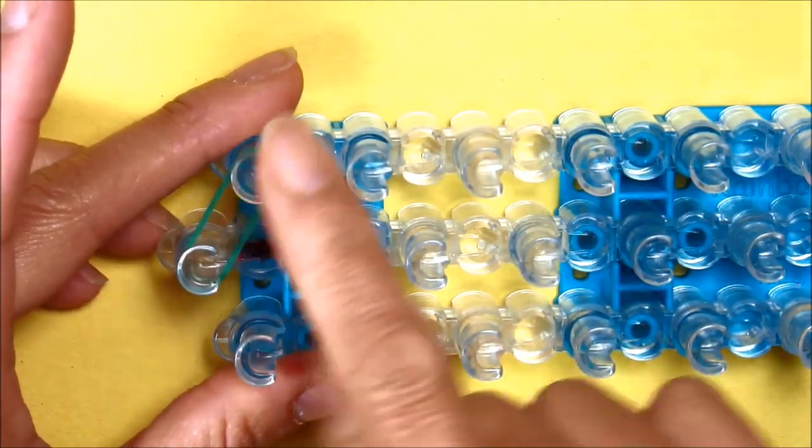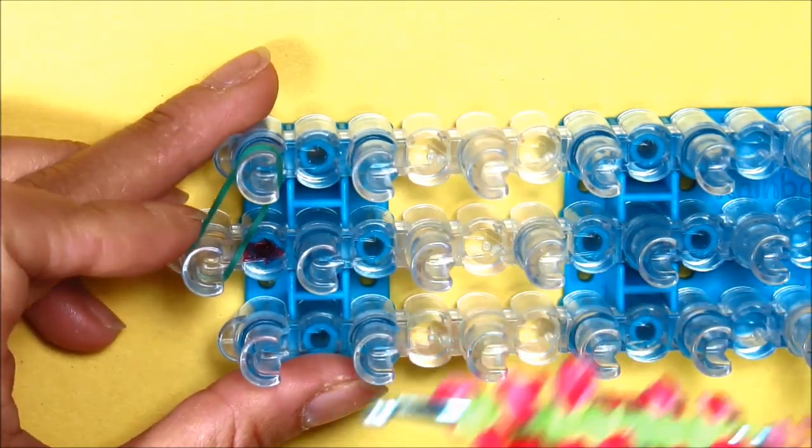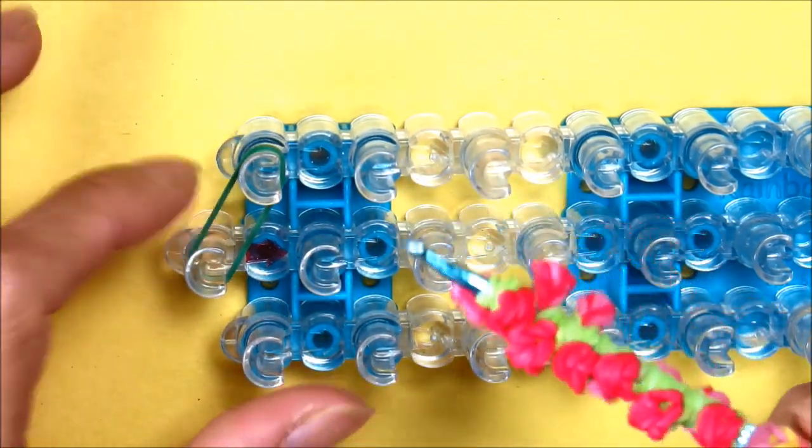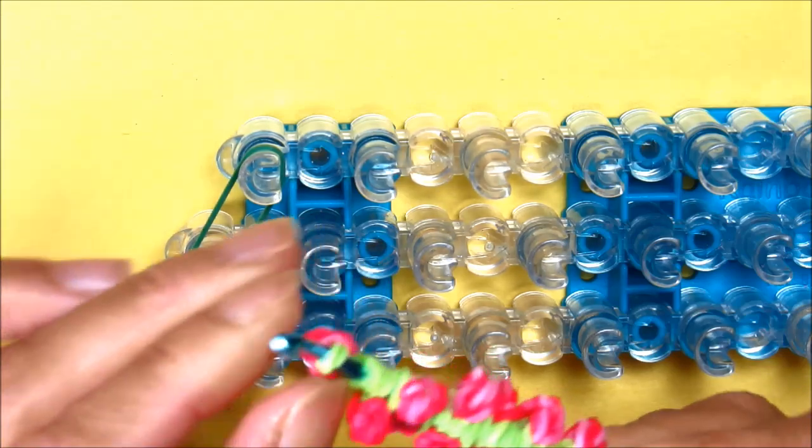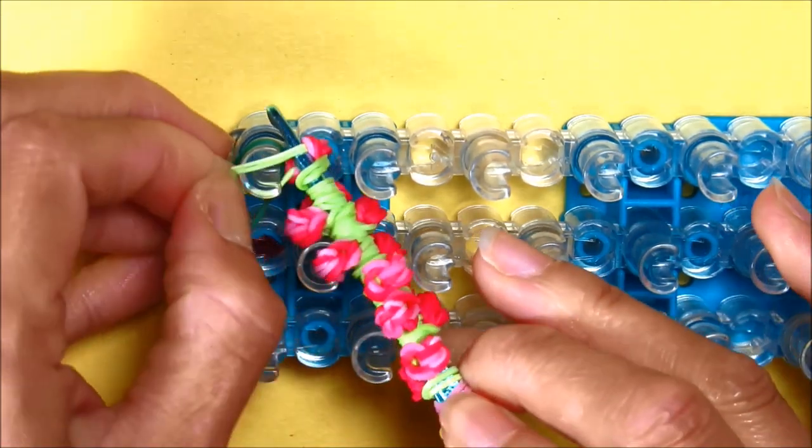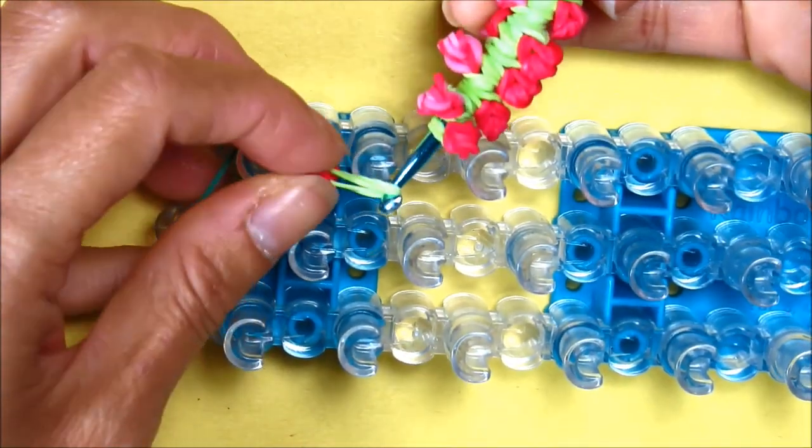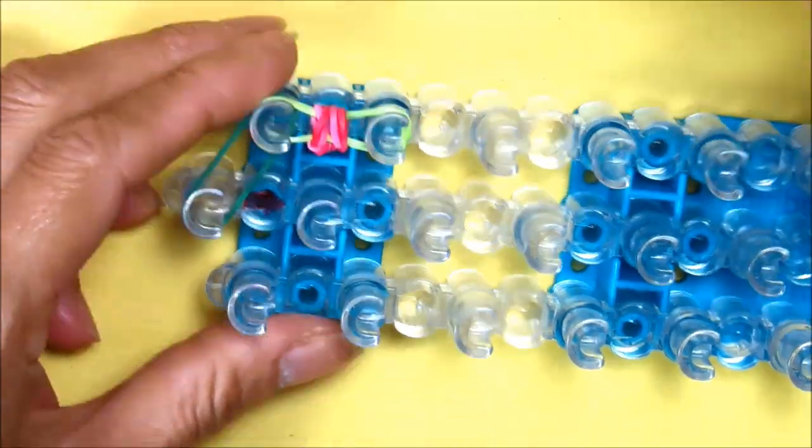Looping it from the first center peg to the side, and we are going to alternate it with a single rubber band. Again, and now we are going to take our rosebud off and loop it.